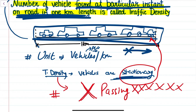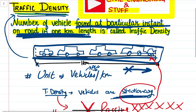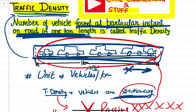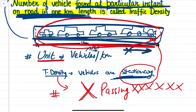We are looking at the vehicles that are occupying this one kilometer section of the road at any particular instant of time — it can be the peak hours, the mid-peak hours, or low traffic volume times like 2 AM or 3 AM in the morning. The unit of traffic density is vehicles per kilometer.